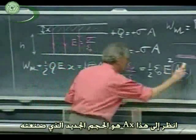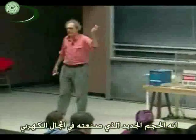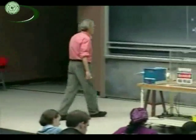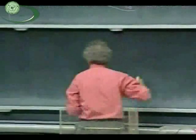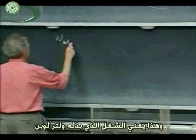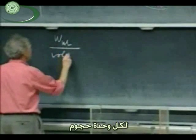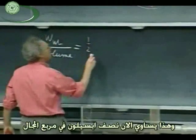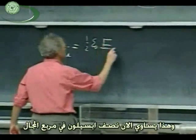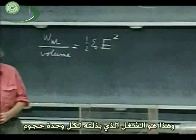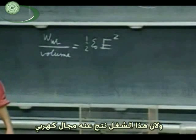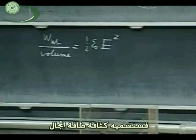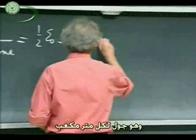Look at this — AX is the new volume that I have created. It is the new volume in which I have created electric field. This now gives us the work done by Walter Lewin per unit volume. We can reduce the energy, and that equals one half epsilon zero times E squared. This is the work that I have done per unit volume. Since this work created electric fields, we call it field energy density, and it is in joules per cubic meter.